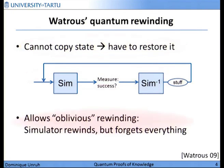What you can achieve with this technique is what I call oblivious rewinding. If the simulator says it wants to rewind to the beginning, that works — he goes back to the beginning, but he forgets everything he has learned, because we rewind the whole state of the simulator. No problem in typical zero-knowledge simulations, because he just wants to try again and doesn't need to remember that he's trying again. But this will be important later.